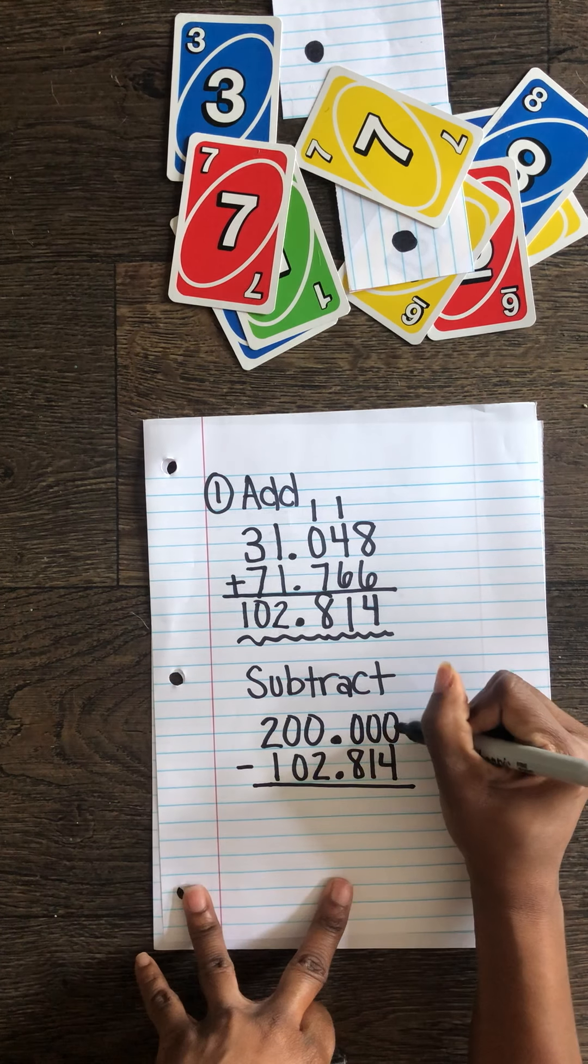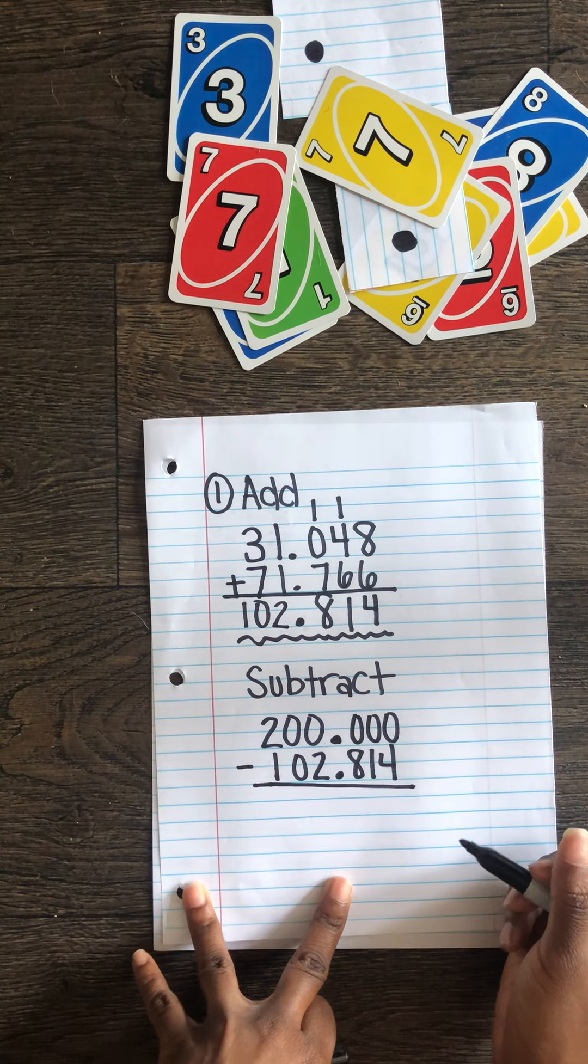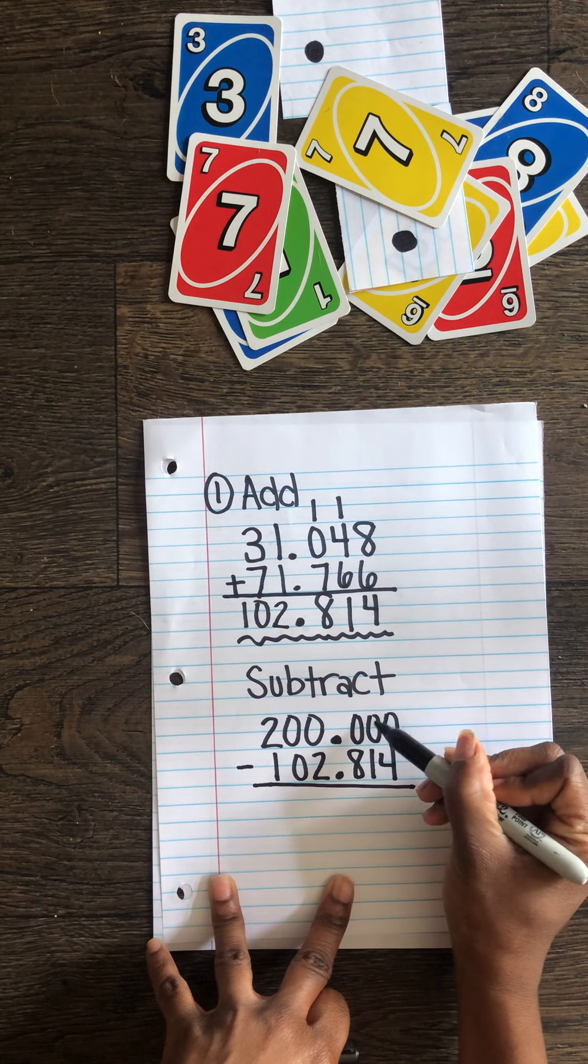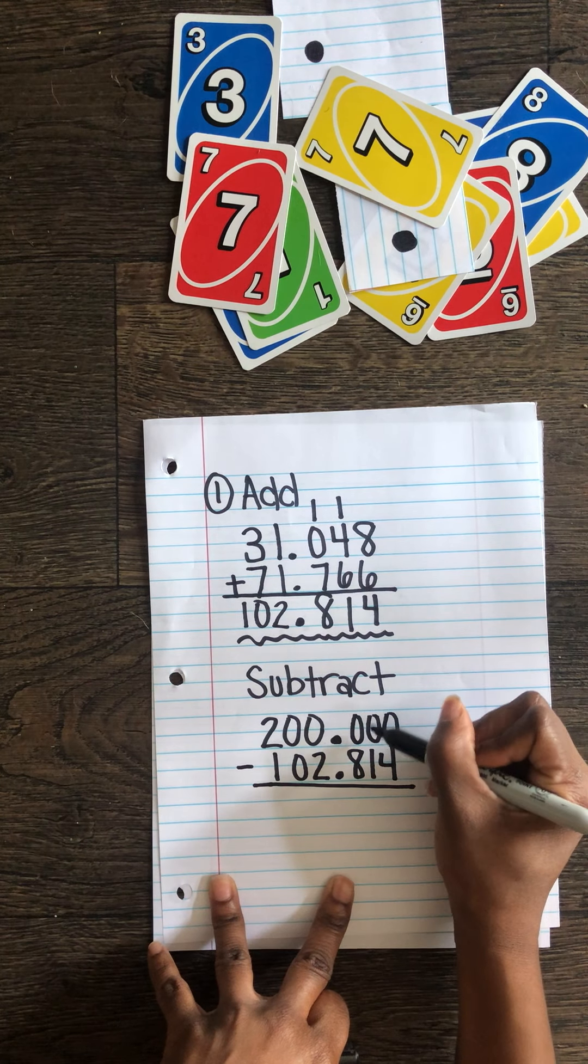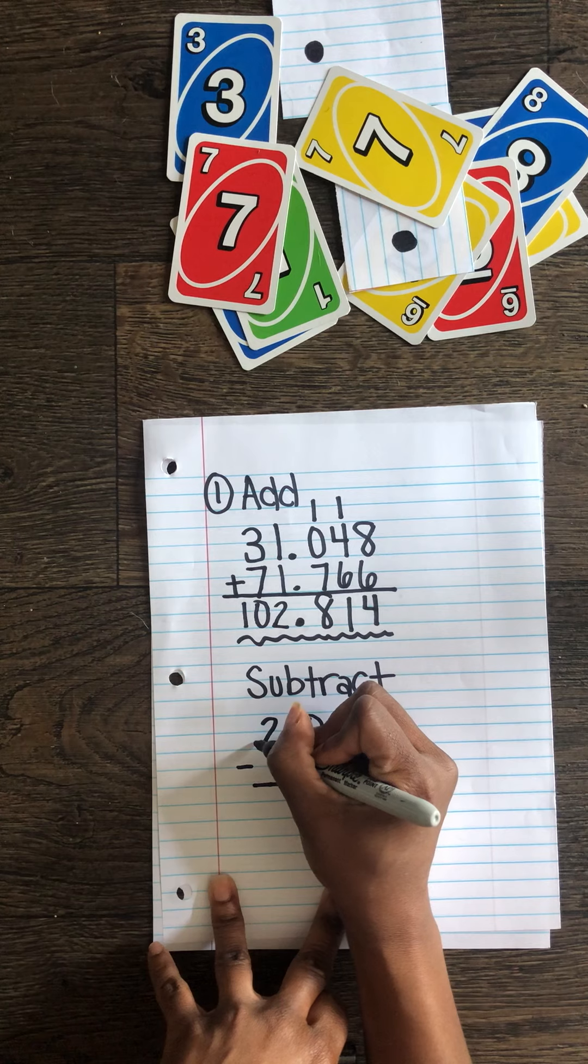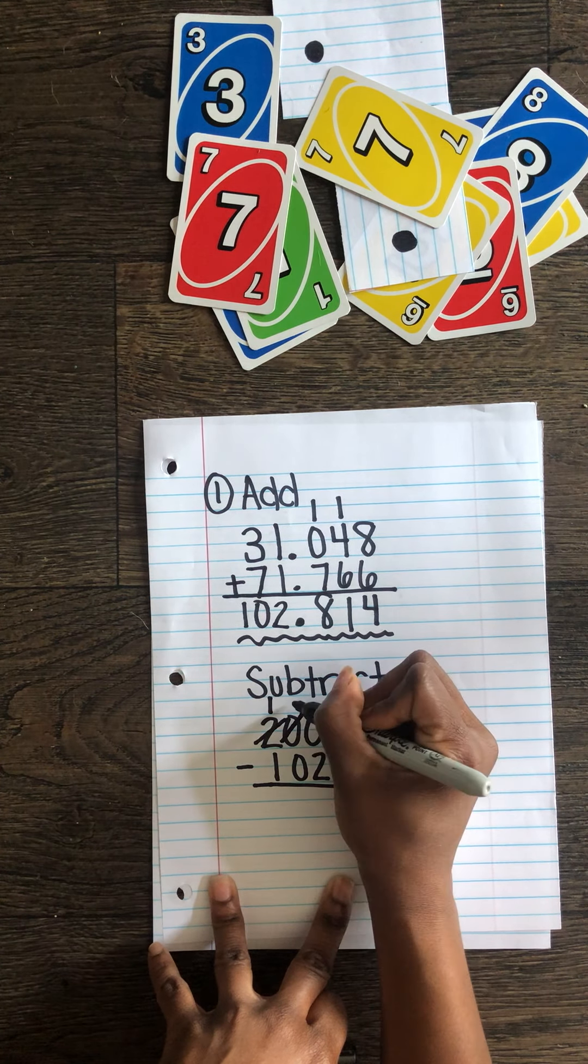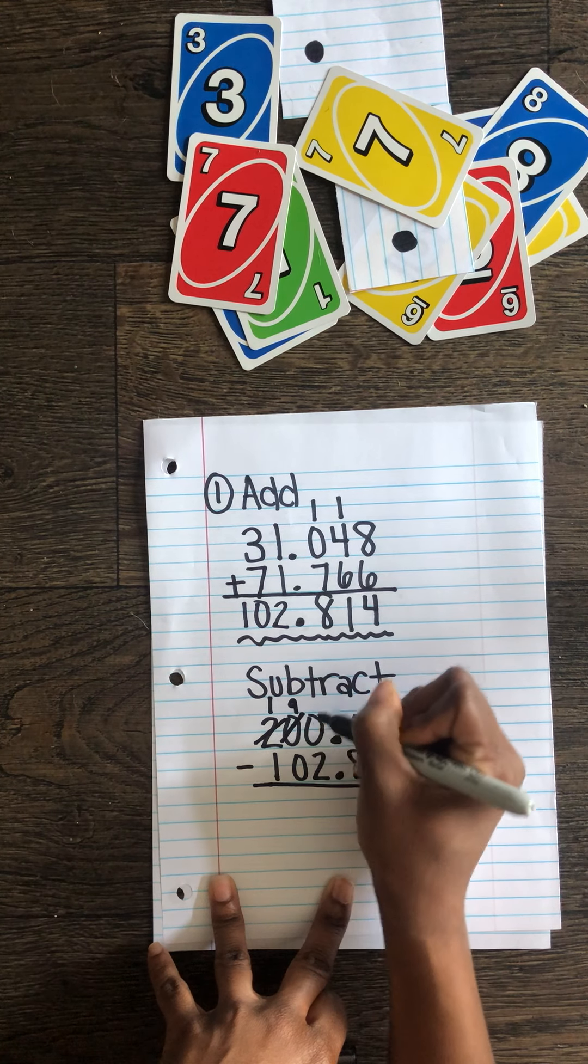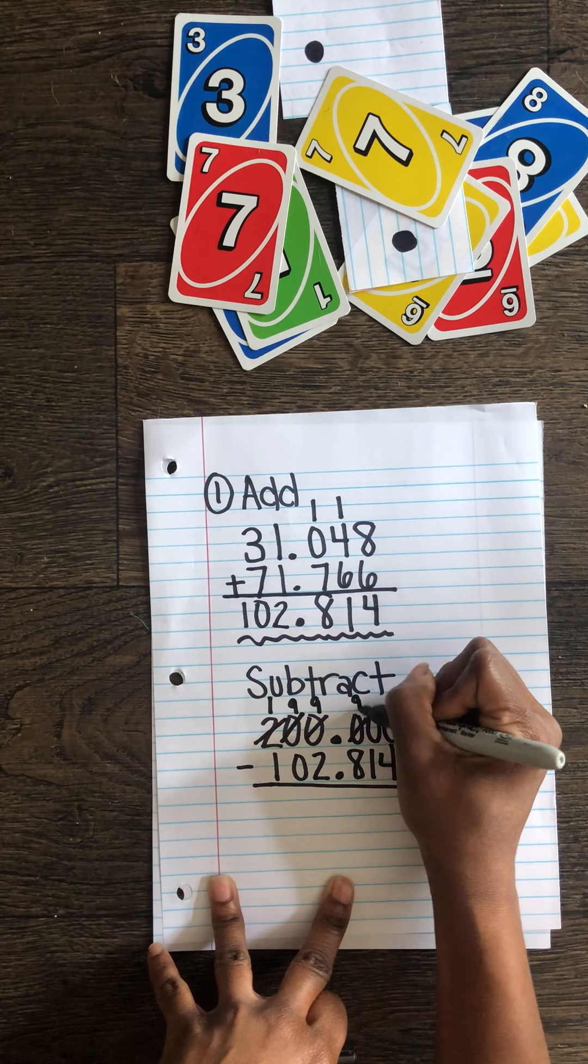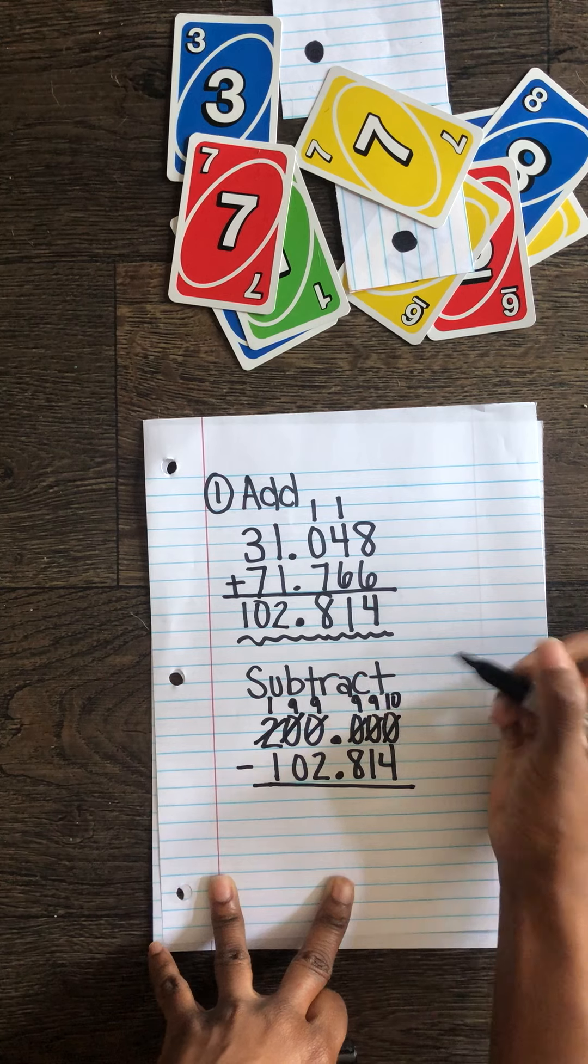When we do this we start by doing zero minus four. We know we can't do zero minus four. So we need to go borrow from a neighbor. But we notice that there's a zero there too. So we continue on till we find a neighbor that can help us. There's a two here. So we'll cross that out. Turn that to a one. Cross that zero out because we borrowed from there to create a nine. And we're borrowing. We continue to borrow until we get to the last one. This turns into a ten.